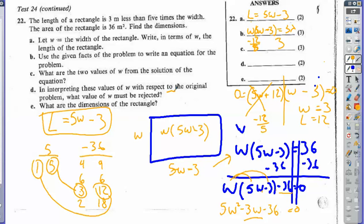Interpreting the values, which is going to be rejected? Well, the negative is going to be rejected because you can't have a negative side length. And finally, what are the dimensions of the rectangle? That's right here: 3 and 12.